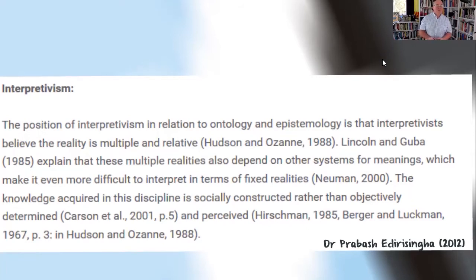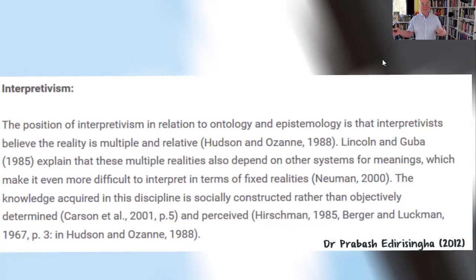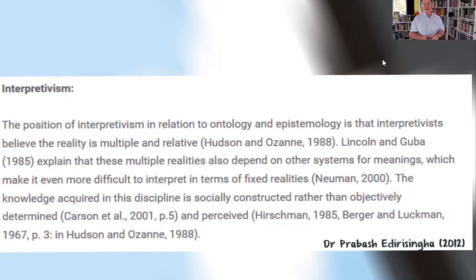From the position of interpretivism in relation to ontology and epistemology, interpretivists believe that reality is multiple and relative. Just from the point of view of different people's perspectives — like with that glass of wine — different people are going to view it in different ways. It could be relative, dependent on where they are in the world, how they see the world at the moment, and their particular experiences and beliefs. So all of this is rather relative — it's not the fixed situation of provable facts that quantitative research would look at.